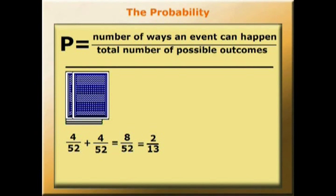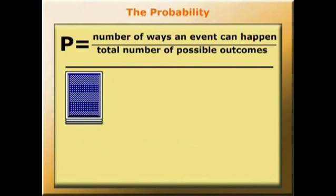And if we express that as a decimal, if we divide 2 by 13 using your calculator, you'll find that it's 0.154. So the possibility of drawing either a king or a queen is 0.154.